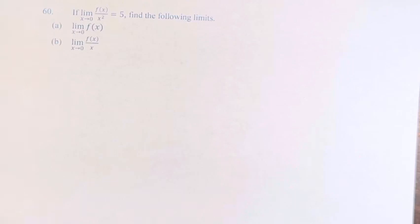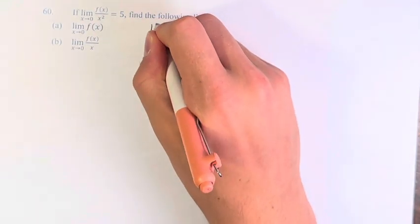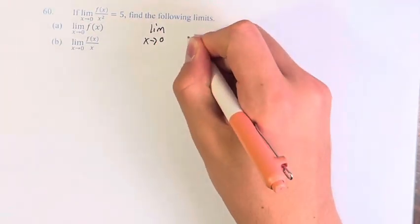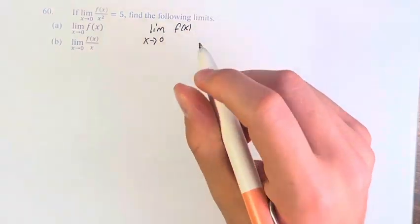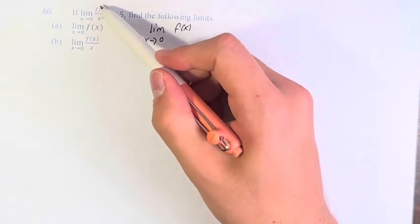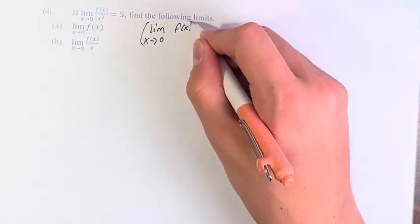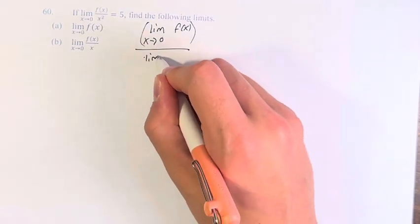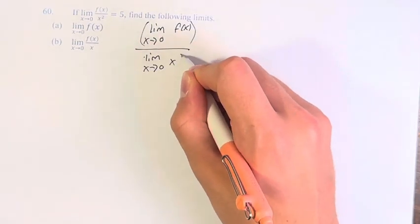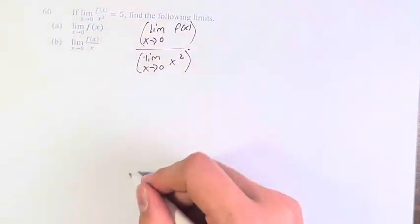So first, we have the limit as x approaches zero of f(x). If we have right here our original equation, the limit of f(x) over x squared, we can take the limit of f(x) and divide the limit of x squared. Using our limit laws, we can separate the fraction.